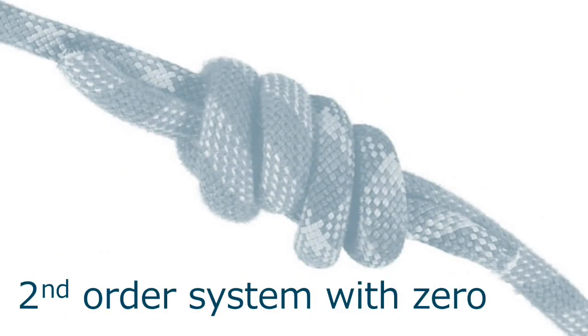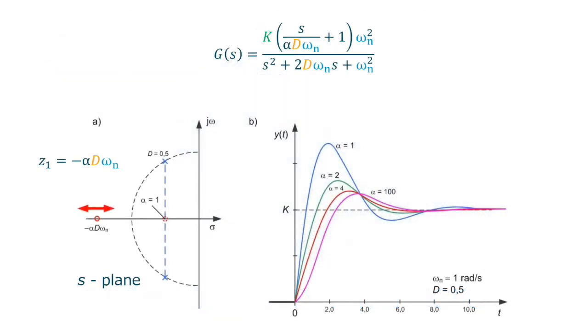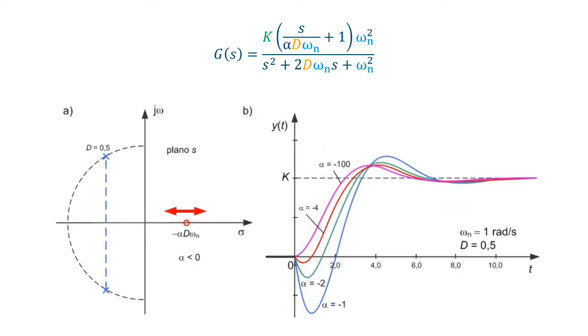Let us now add a zero to the second-order system and see what happens. The presence of a zero near the complex poles usually increases the overshoot effect. But if the zero is on the right semi-half of the complex plane, instead of an overshoot, we will have an undershoot. And I can tell you that this can be quite problematic in the development of the controller.